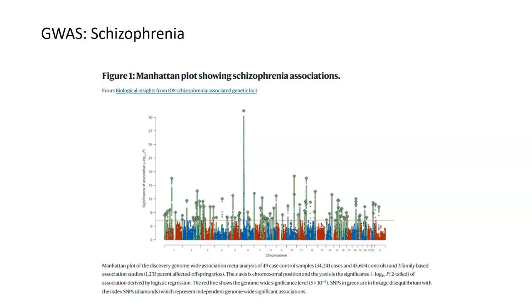This speaks to why it's so difficult to treat mental disorders like schizophrenia — it's difficult to treat this many potential genetic defects at once. Different genes affected in different patients, maybe one gene, maybe ten or twenty, can lead to a huge spectrum of symptoms from patient to patient and a huge spectrum in the effectiveness of treatments. This is also important when thinking about autism, which similarly has many genetic locations implied, explaining why it's a spectrum disorder ranging from very mild to very severe.